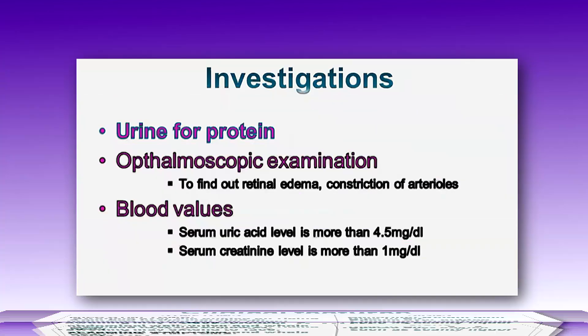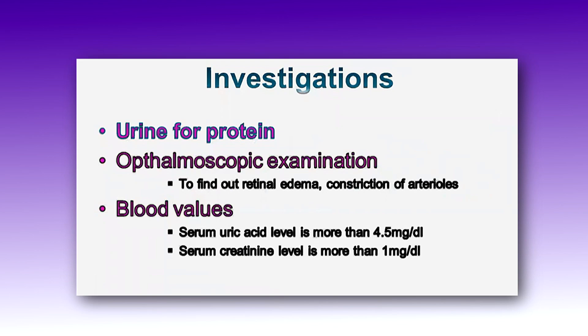Here we discuss the main investigations in case of preeclampsia. Obviously, there will be frequent BP monitoring. Then a urine test for protein, and ophthalmoscopic examination to find out retinal edema and constriction of arterioles. For blood tests, we need to check the serum uric acid level and serum creatinine level. A serum uric acid level of more than 4.5 mg/dL and serum creatinine more than 1 mg/dL are important warning values.